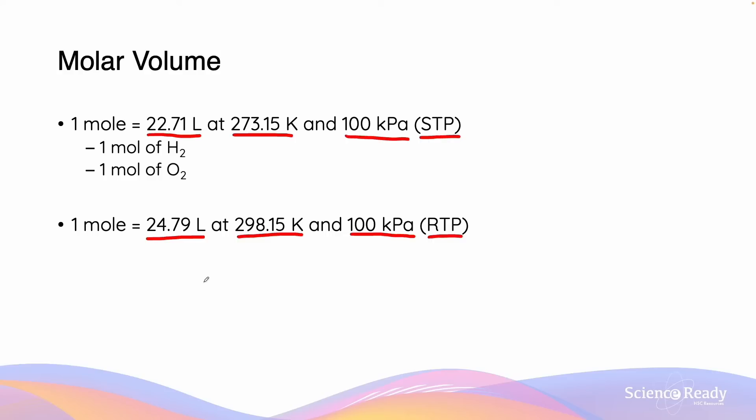So what does this mean? This means that if a question described there to be one mole of H2 hydrogen gas or one mole of O2 oxygen gas at STP, you would know that the volume of both of these gases would be equal to 22.71 liters. And similarly, one mole of H2 and one mole of O2 gas at RTP would occupy a space of 24.79 liters each.